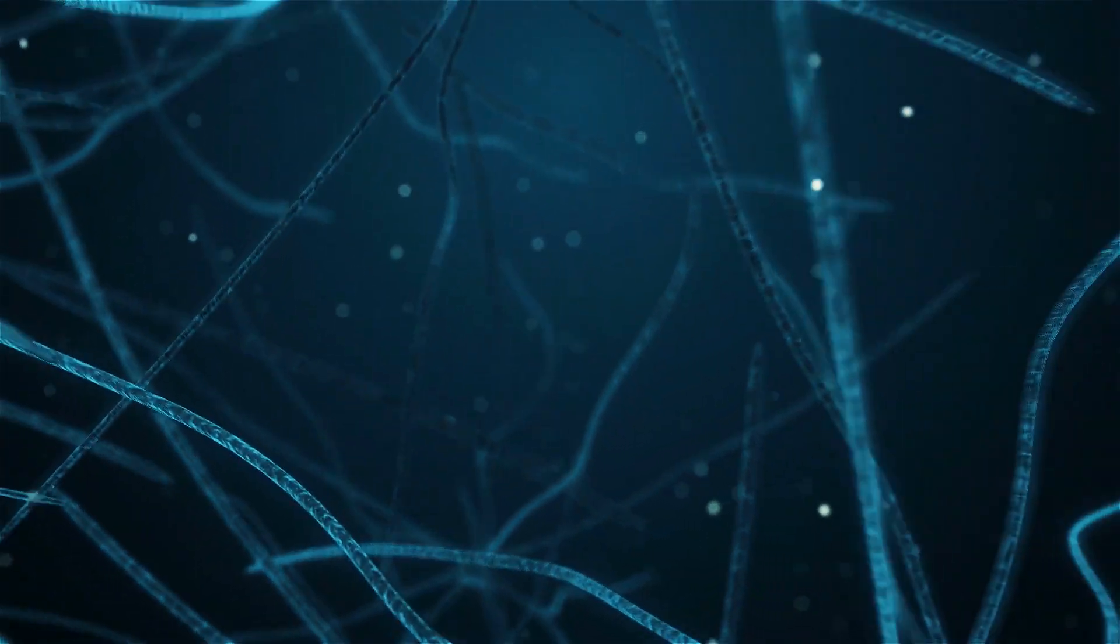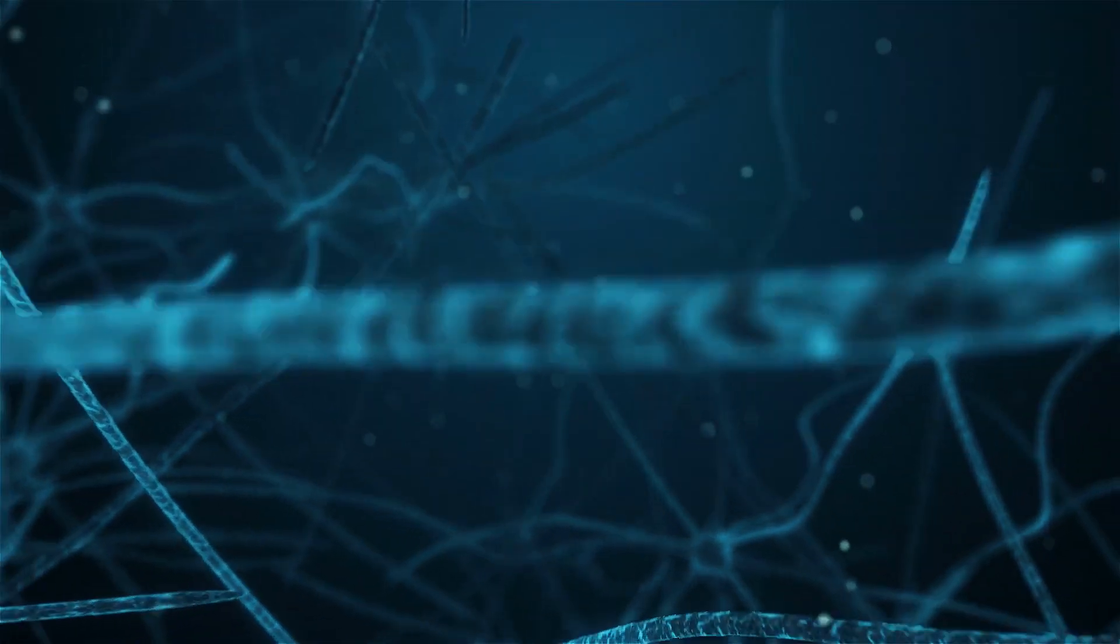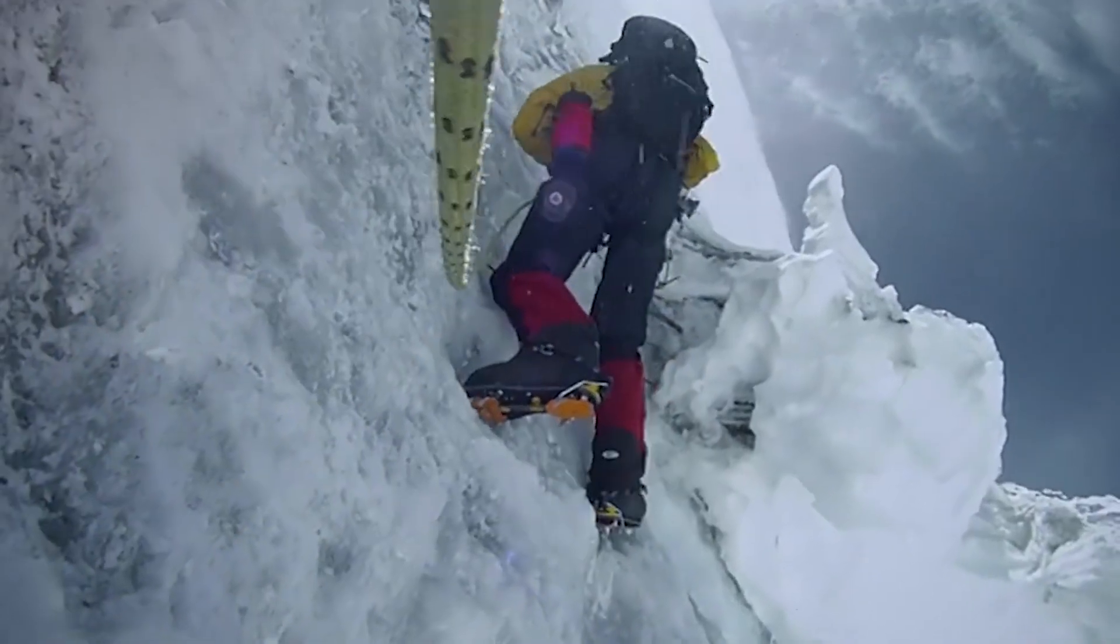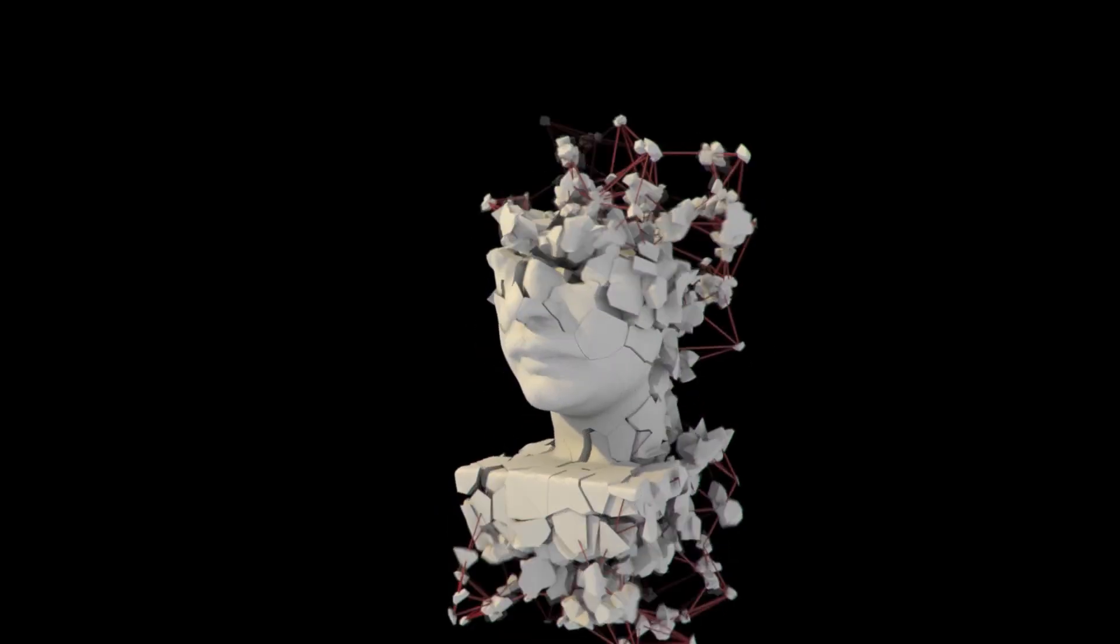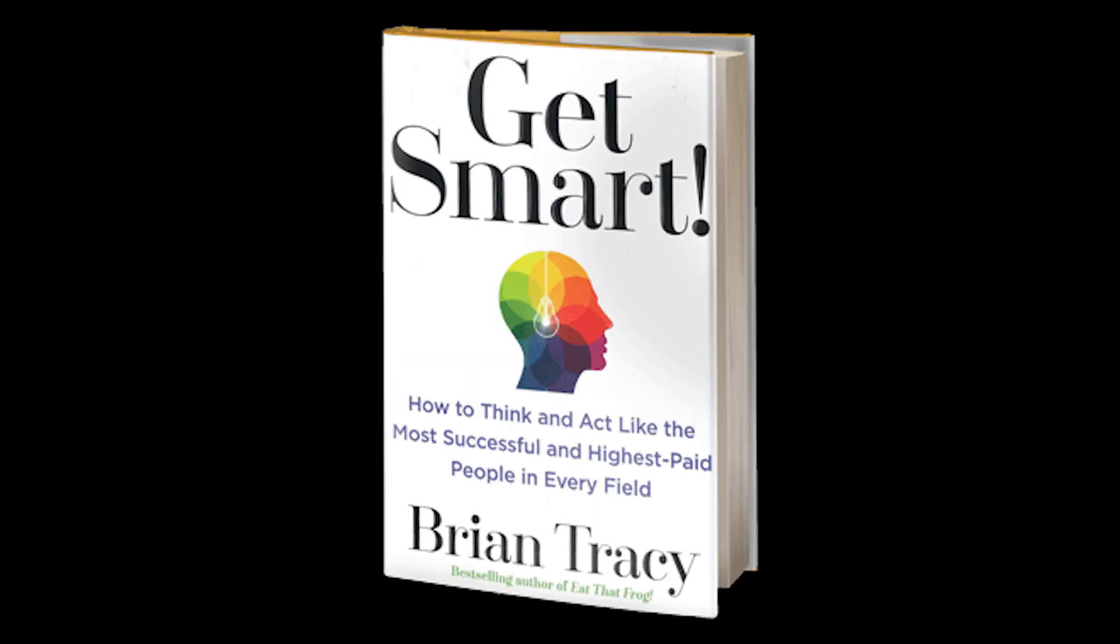It's estimated that we have 70,000 different thoughts a day, each one moving us closer or further away from our goals. To get the life that we need, we need to optimize these. Let's dive deep into Brian Tracy's goldmine. Get smart.